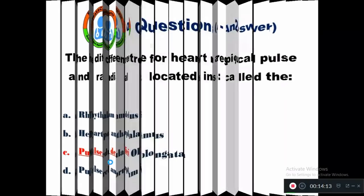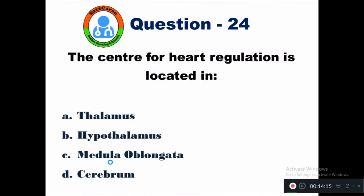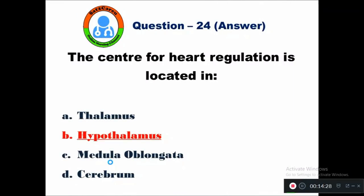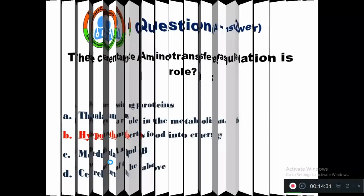Question 24: The center for heart regulation is located in — option A thalamus, B hypothalamus, C medulla oblongata, D cerebrum. The center for heart regulation is located in the hypothalamus.